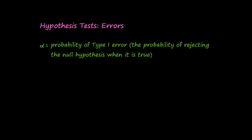Alpha is the probability of Type 1 error. That's what we discussed before, the probability of rejecting the null hypothesis when it's actually true.